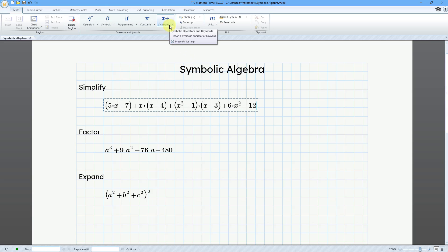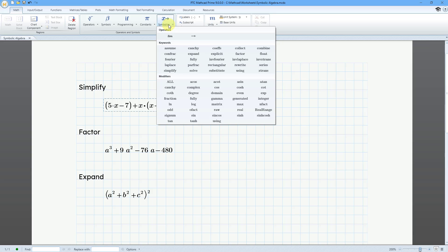Then I will go to the Symbolics dropdown from the Math tab. Up at the top we have our operators and here is symbolic evaluation. The keyboard shortcut is Control and the plus sign.